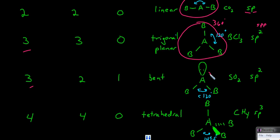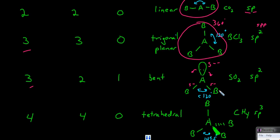The bond angle is a little less than 120 degrees because this lone pair of electrons is more relatively negative than the bond between A and B — it's just electrons here, whereas the bond also has positive protons near it. There's a greater overall negative charge from the lone pair than from these bonds, so this lone pair will repel both bonds more than the bonds repel each other. They'll be a little bit closer together, so the bond angle is a little bit less than 120 degrees. A good example is sulfur dioxide, and this is SP2 hybridized around the central atom — there are three things around the central atom, so SP2.